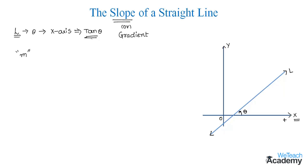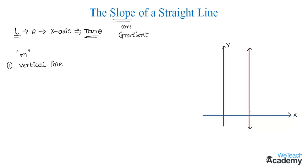Let us discuss a few cases regarding the slope of a straight line. In the first case, a vertical line makes 90 degrees with the x-axis. The slope of such a vertical line is not defined.